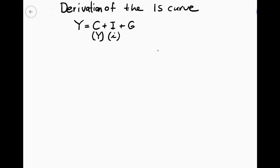The derivation of the IS curve is possible using either the market for loanable funds graph or the Keynesian cross. Let us start with the loanable funds market based derivation.